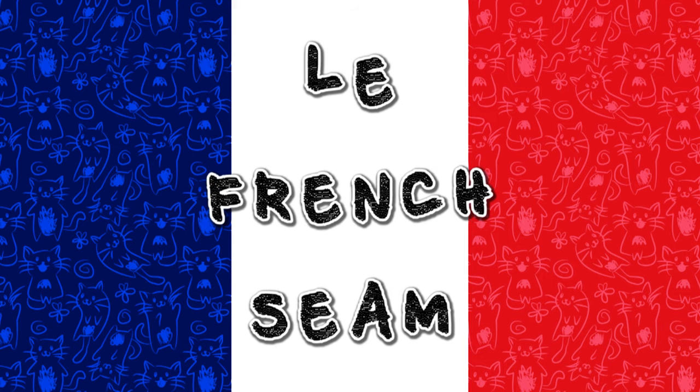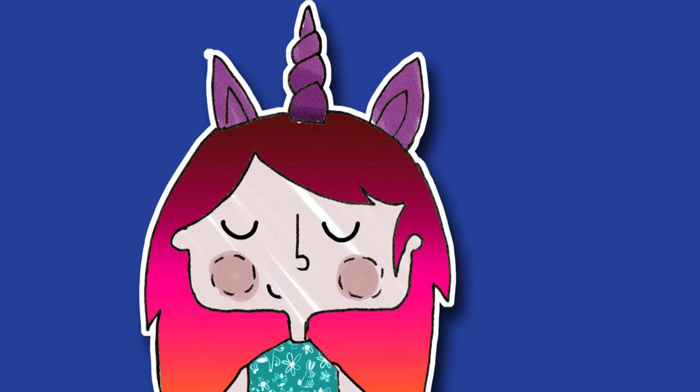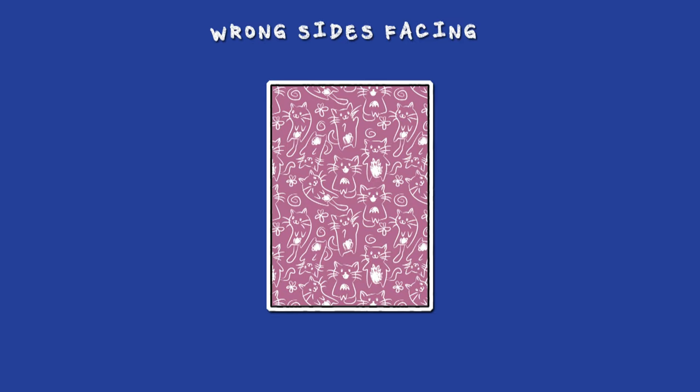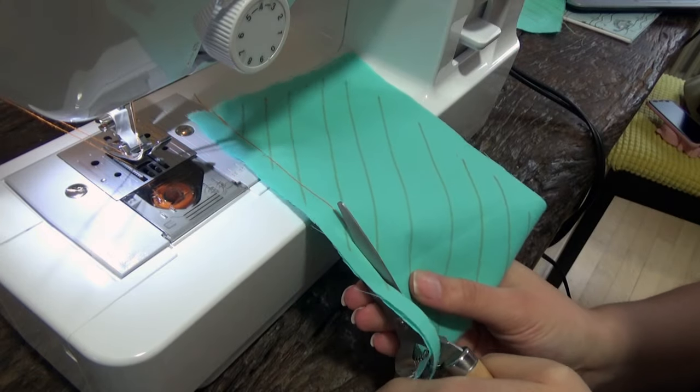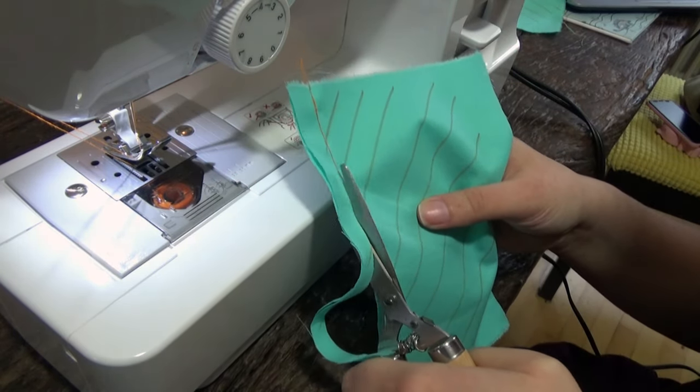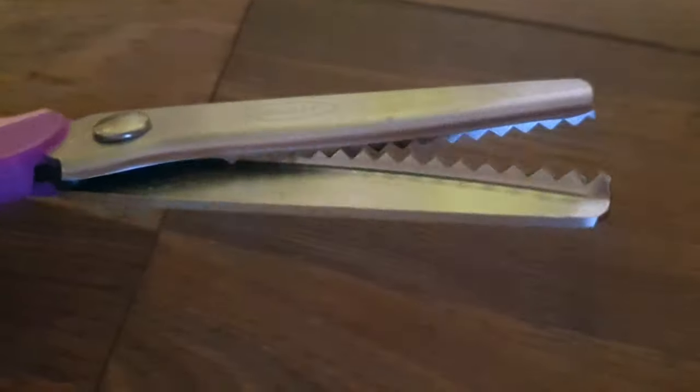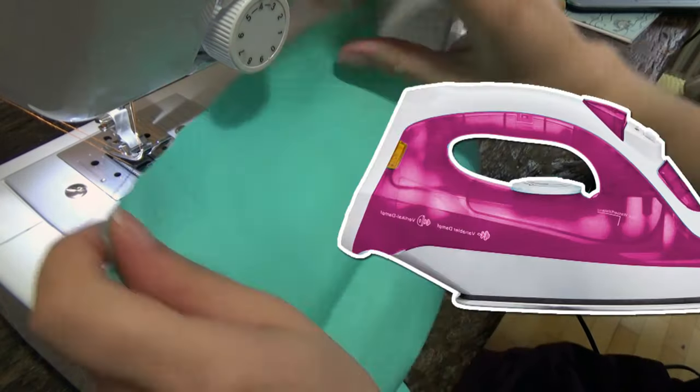The french seams. Although it sounds complicated this seam is very straightforward. We just need to start with the wrong sides facing for a change. Then sew your normal straight seam. Take a pair of scissors and trim that seam allowance in half. If your fabric allows so. If you feel that's going to fray too much leave a little bit more or take one of those zigzag scissors just to be sure nothing will fall apart. Press that seam flat.